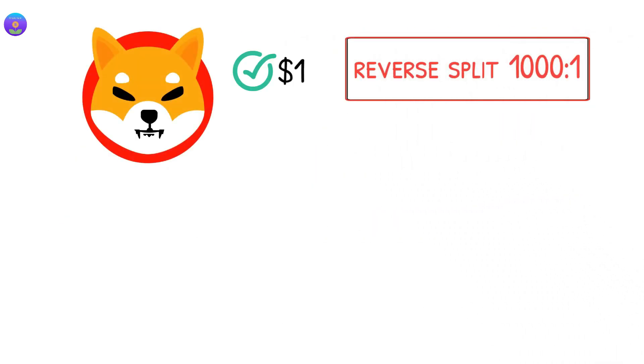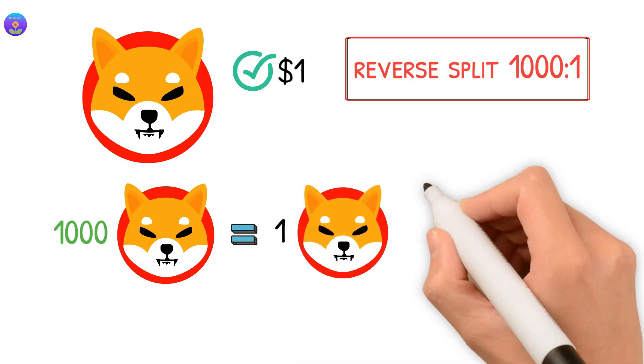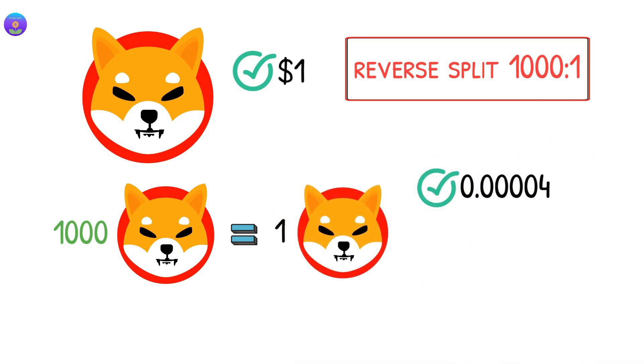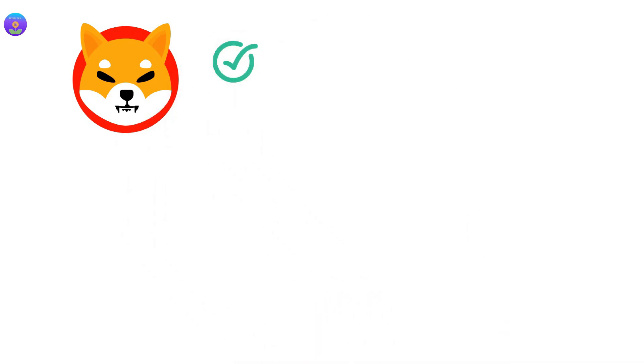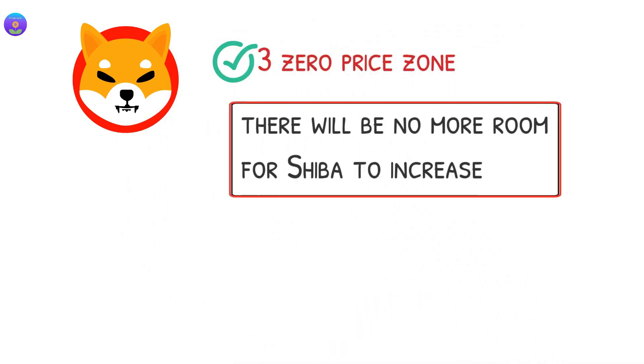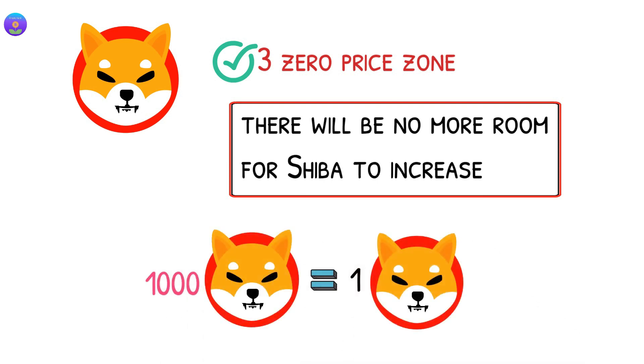For Shiba to reach one dollar, a reverse split one thousand to one will be a good fit. This means each one thousand Shiba tokens you have will be converted to one Shiba token, but instead of the price of Shiba worth $0.00004, now it is equal to 4 cents. But we expect this split to take place when Shiba is at 3-0 price zone since there will be no more room for Shiba to increase. Each one thousand Shiba tokens will equal one Shiba which is worth 40 cents.